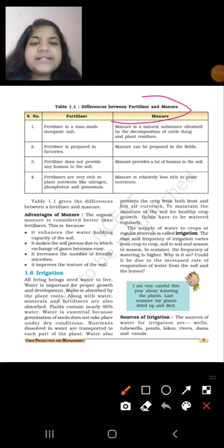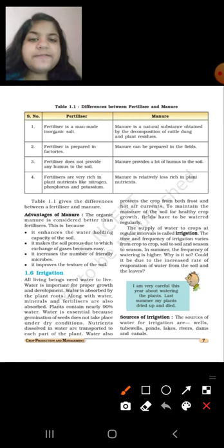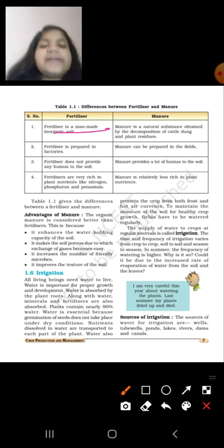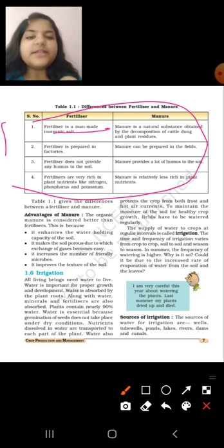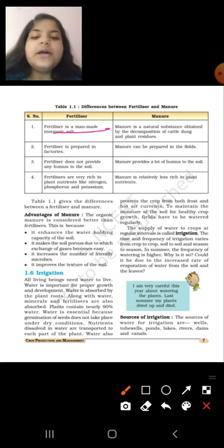Difference between fertilizers and manure. These are the four differences which are given here. Fertilizer is a man-made inorganic salt. Manure is a natural substance obtained by the decomposition of cattle dung and plant residues. Fertilizer is prepared in factories. Manure can be prepared in the fields. Fertilizer does not provide any humus to the soil. Manure provides a lot of humus to the soil. Fertilizers are very rich in plant nutrients like nitrogen, phosphorus, and potassium. Manure is relatively less rich in plant nutrients. These are some of the four differences between fertilizers and manure. Table 1.1 gives the difference between manure and fertilizer.